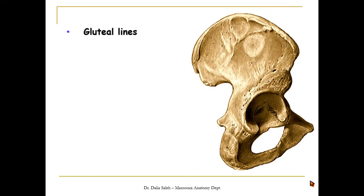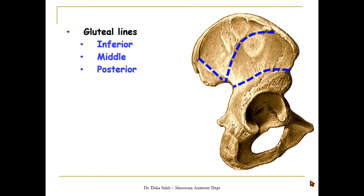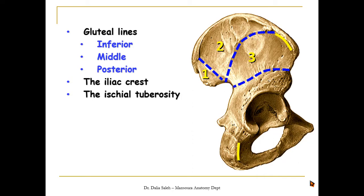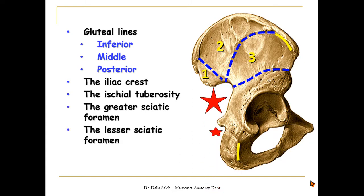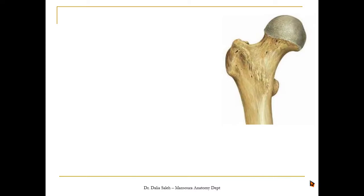This is a picture of the right hip bone. We can see three gluteal lines on the lateral surface of the ilium: the inferior, the middle, and the posterior gluteal line. They divide the lateral surface of the ilium into three regions. We also have an area extending from the anterior superior iliac spine to the iliac tubercle on the iliac crest. This is the ischial tuberosity and its lateral surface. Posteriorly we have the greater sciatic notch and the lesser sciatic notch, separated by the ischial spine.